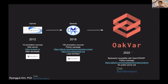This year I launched Oak Far. It's a further developed version of Open CRAVAT and is backward compatible with it. It is still a Python package. There is no public server yet for Oak Far, so if you want to conveniently go to a web server and upload your genome and get annotation data, run.opencarvet.org is the place to go.